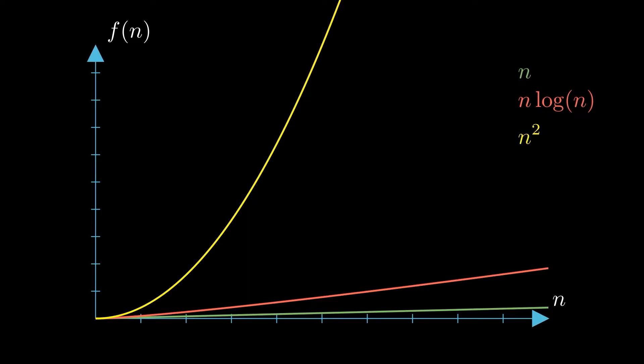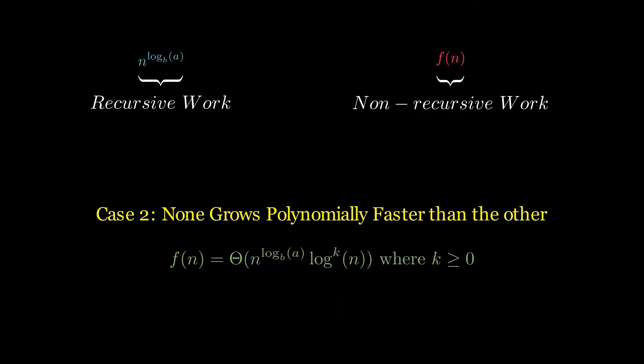So in this case, both recursive and non-recursive parts should be taken into consideration. This gives the time complexity Θ(n^(log_b(a)) × log^(k+1)(n)). Here the log term accounts for the logarithmic contribution at each level of recursion.